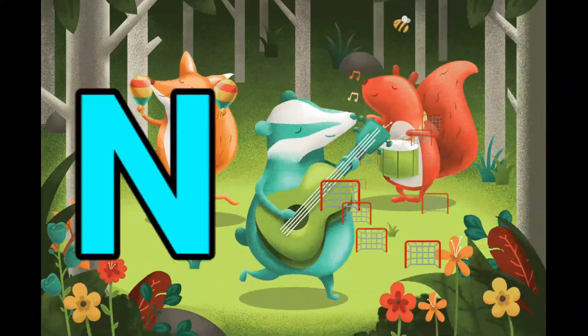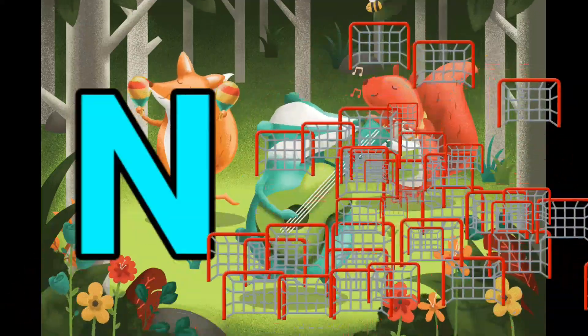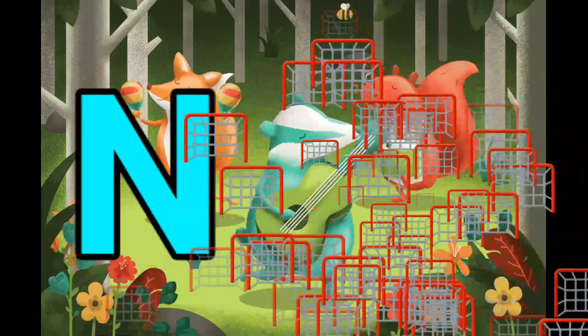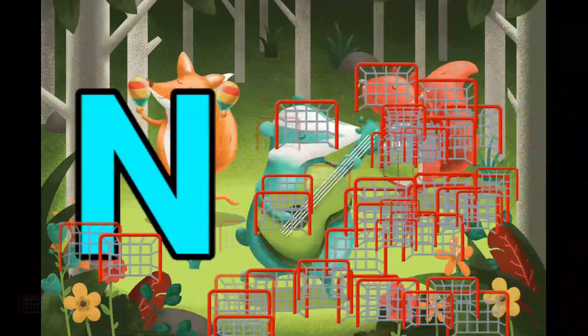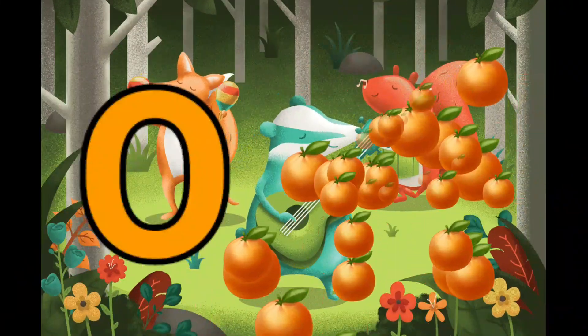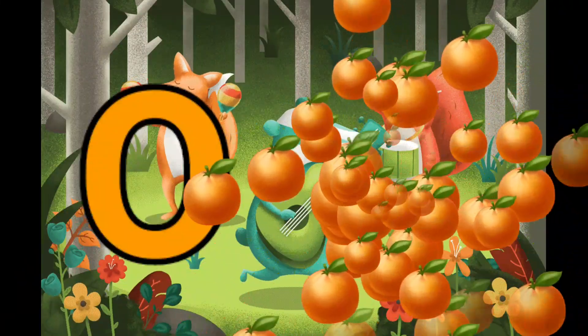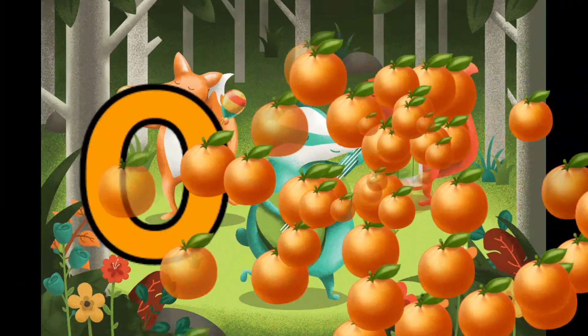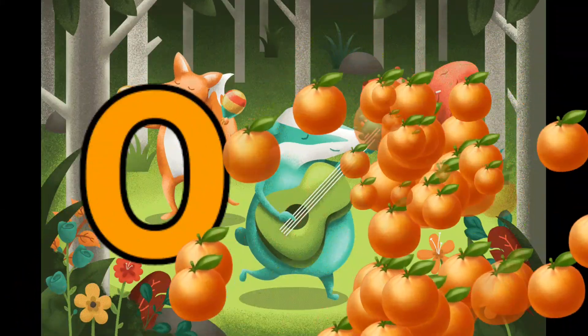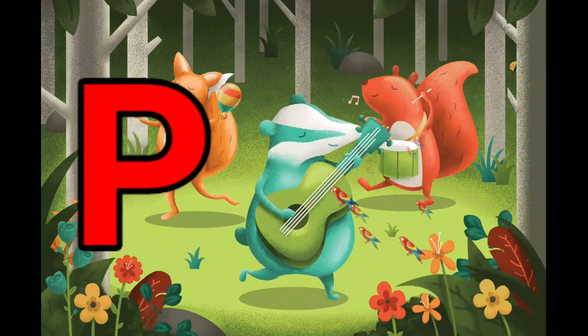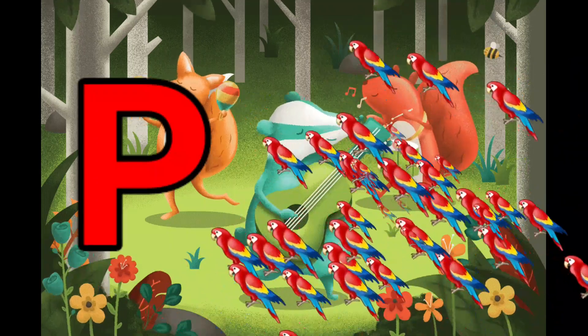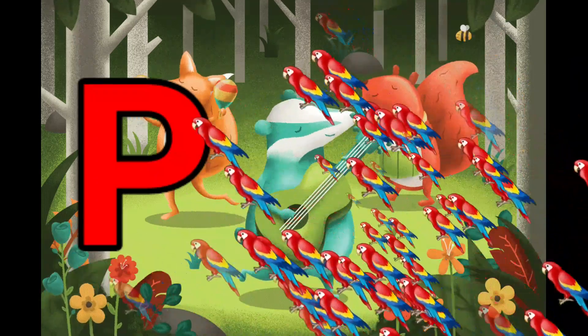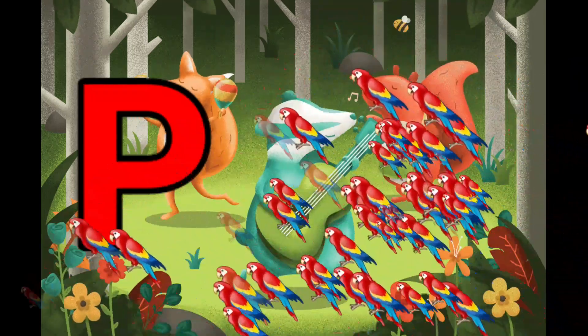N is for Net. N-N-Net. O is for Orange. O-O-Orange. P is for Pet. P-P-Pet.